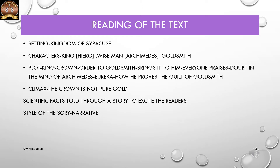Coming to the textbook, we assume that you have read the story. The setting is in the Kingdom of Syracuse. If you look at the characters, there are three important ones: the king of Syracuse, Hero; the wise man in his court, Archimedes; and a goldsmith. The plot, which is the summary of the story — we already know these elements from lessons like Rip Van Winkle — so I am not going to explain each and everything in detail since we have already done it in other lessons.